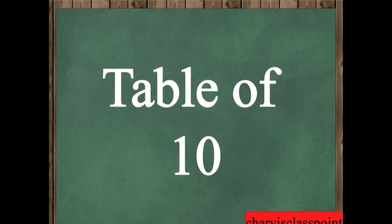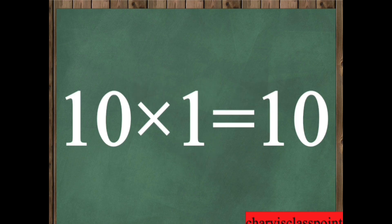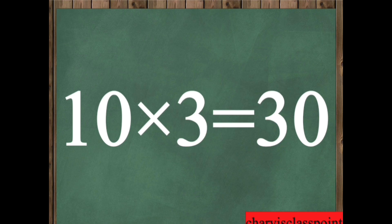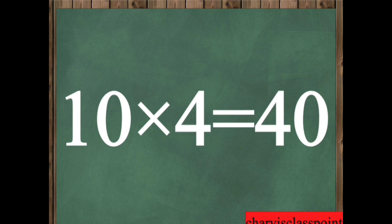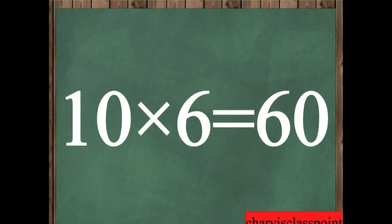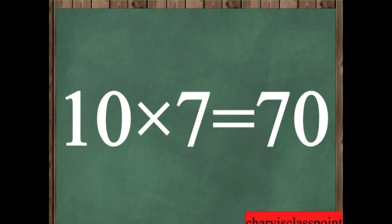Table of ten. Ten, one is ten. Ten, two is twenty. Ten, three is thirty. Ten, four is forty. Ten, five is fifty. Ten, six is sixty. Ten, seven is seventy.